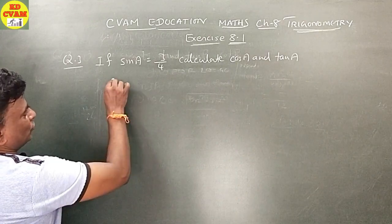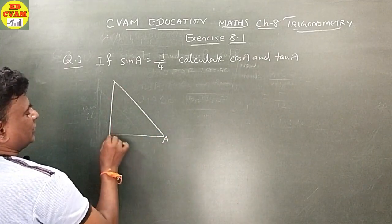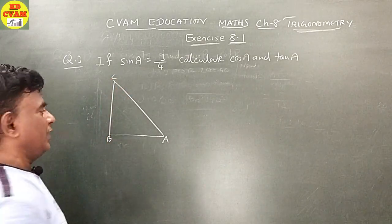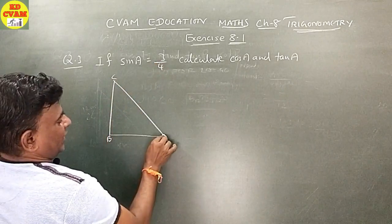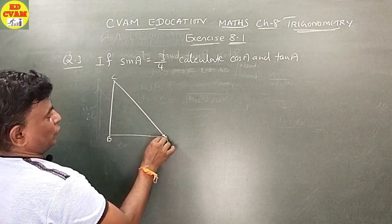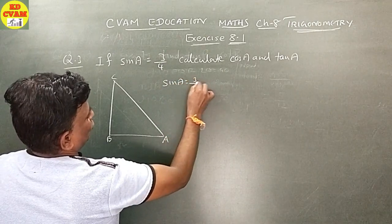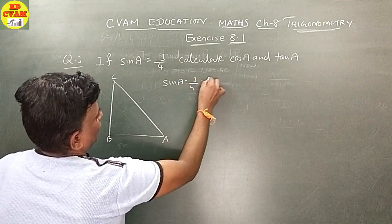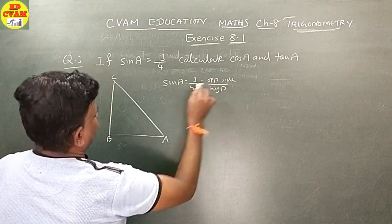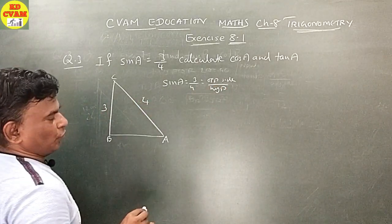We will use the triangle method. Take triangle ABC. Sin A is equal to opposite side upon hypotenuse, which equals 3 upon 4. So opposite side is 3 and hypotenuse is 4.